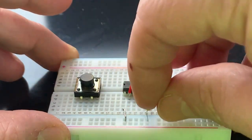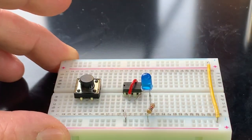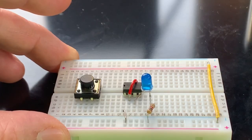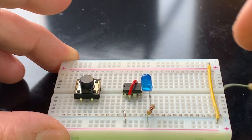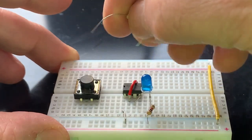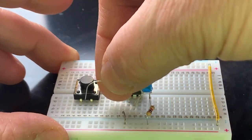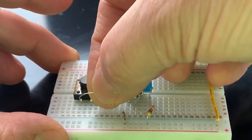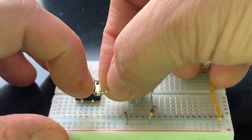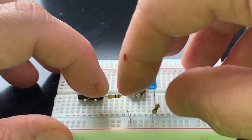There's a current limiting resistor for the LED here. And then pin three also gets the 100k ohm resistor that feeds back to the switch so that it can charge the capacitor. And we'll talk about that in a little bit.